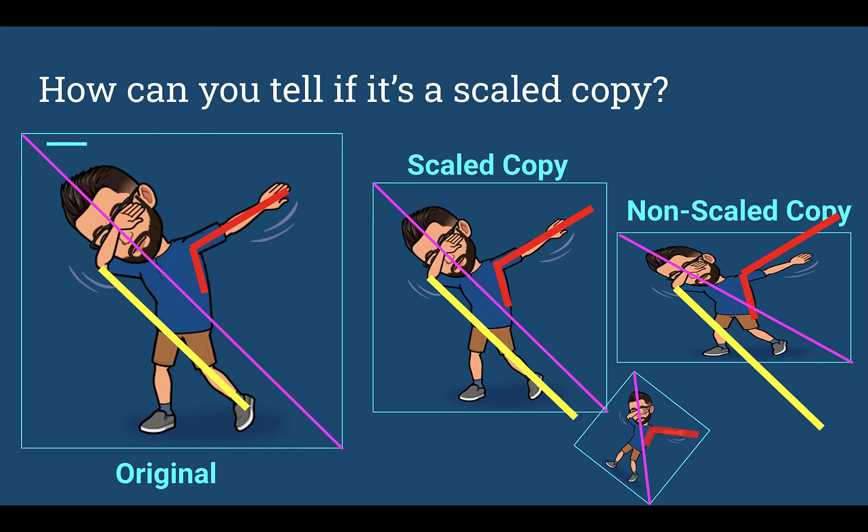So, diagonal is still the same. That angle is going to be the same as the original arm. Elbow through the leg would still be the same, and so on.